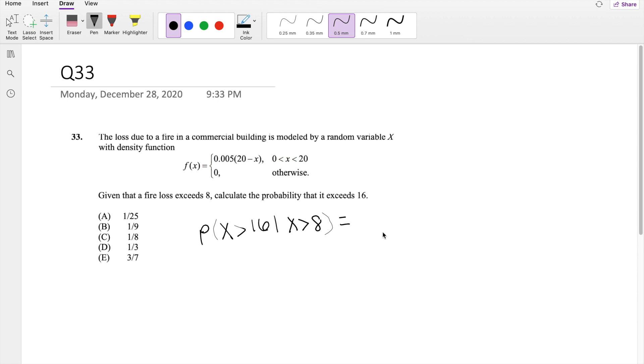So by the conditional probability formula, we can break this down into probability that x is greater than 8 and x is greater than 16, divided by the probability that x is greater than 8. But the thing is, if x is greater than 16, of course it's already greater than 8.